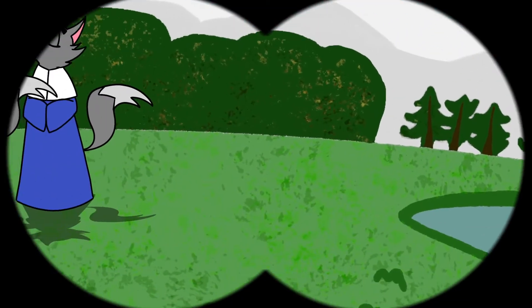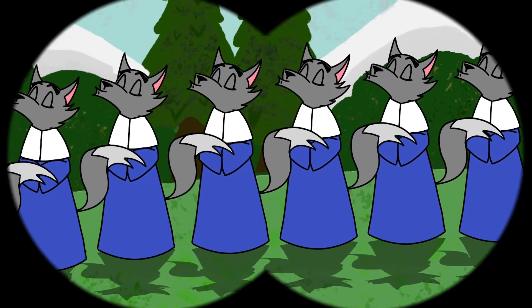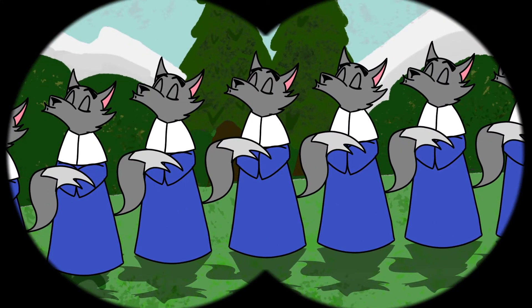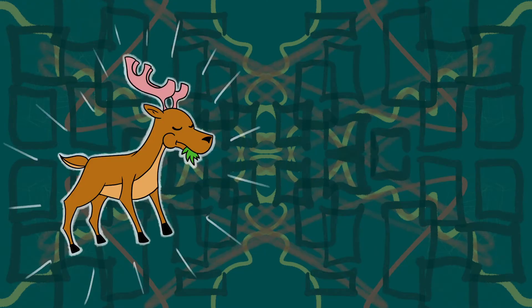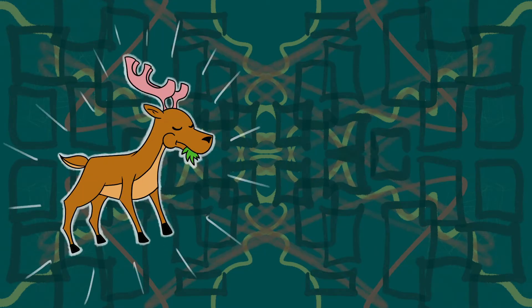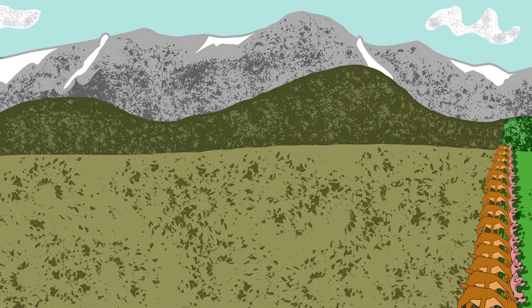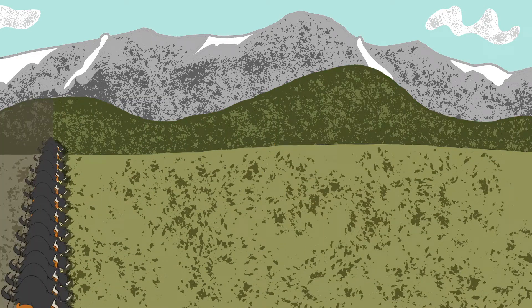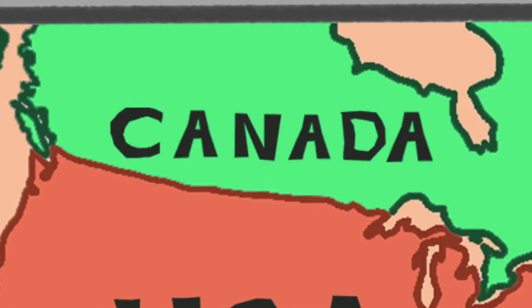Because the wolves have literally changed the course of rivers. They had eradicated the wolf from the park and everything in the park fell out of balance. The deer population exploded, the bison population exploded, and they actually had deforestation caused by overgrazing by the large number of herbivores that were there.